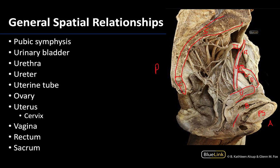Returning to the uterus — the larger portion I've outlined is the body of the uterus, and the inferior third is called the cervix, which is the cervical portion. Right here you can see the vagina, a muscular tube region. The superior portion of the vagina will surround the portion of the cervix that protrudes into it. Lastly, the most posterior visceral structure before you get past the pelvic diaphragm will be the rectum, and as you get to the pelvic diaphragm this will transition into the anal canal.